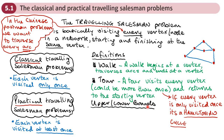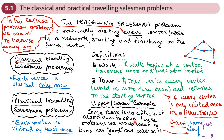Now we're going to have a brief look at upper and lower bounds. Since there is no efficient algorithm to solve these Travelling Salesman Problems, we want to know how good our solution is when we work out the minimum distance that would need to be travelled to visit every vertex and end up back where we started. One way to find out how good our solution is, is to work out an upper bound and a lower bound for the total weight of our tour. The closer our solution is to the lower bound, the better it will be, and if we get a solution equal to the lower bound, we know that's an optimal solution.